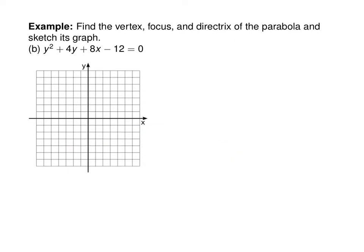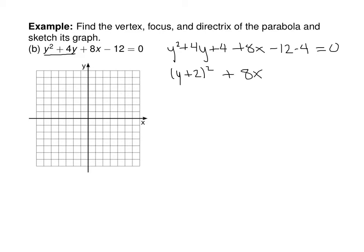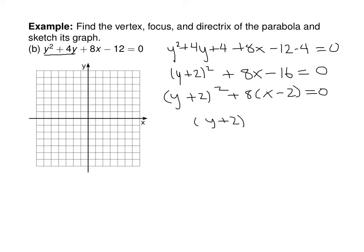For the next parabola we complete the square. We have y² + 4y; adding (4/2)² = 4 gives (y + 2)². To compensate, we also subtract 4. The equation becomes (y + 2)² + 8(x minus 2) = 0, or (y + 2)² = −8(x minus 2). This parabola is sideways because y is what is squared.